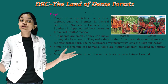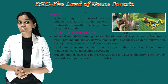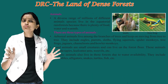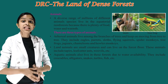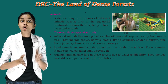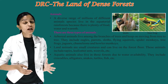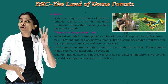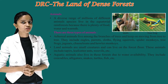Now we are moving towards the animals of these regions. A diverse range of millions of different animal species live in the equatorial rainforest because there is plenty of food, water and warmth. There are three types of animals found in these regions.